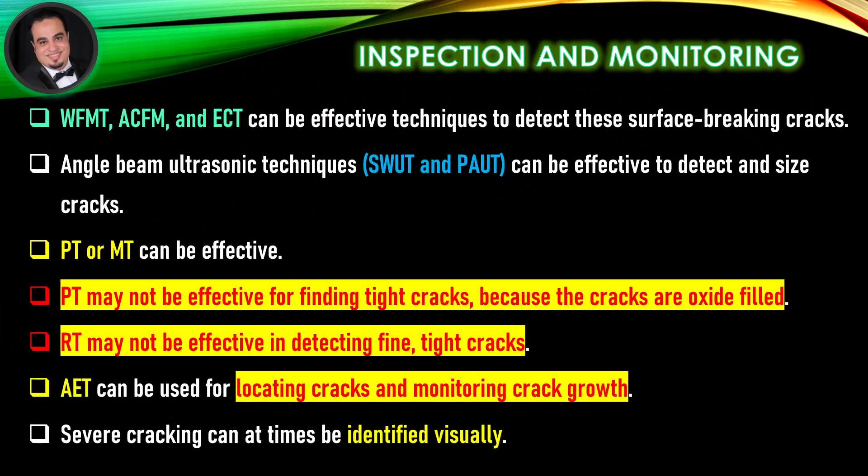Inspection and monitoring: Wet fluorescent magnetic particle testing (WFMT), alternating current field measurement (ACFM), and eddy current testing can be effective techniques to detect surface-breaking cracks. Angle beam ultrasonic techniques, shear wave ultrasonic testing (SWUT), and phased array ultrasonic testing (PAUT) can be effective to detect and size cracks. PT or MT can be effective, but PT may not be effective for finding tight cracks because the cracks are oxide-filled. RT may not be effective in detecting fine, tight cracks. Acoustic emission testing (AET) can be used for locating cracks and monitoring crack growth. Severe cracking can at times be identified visually.